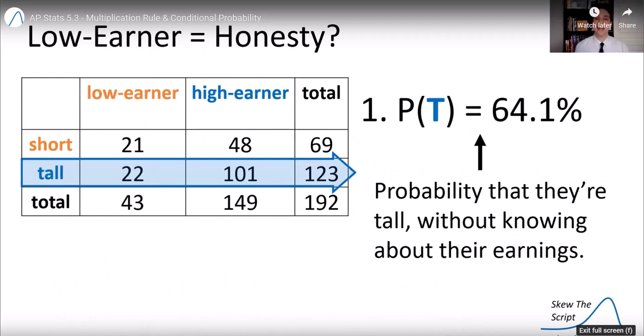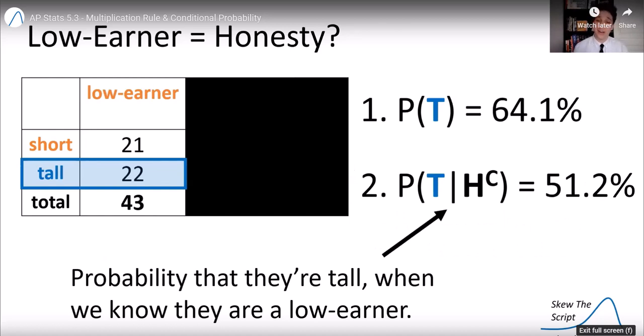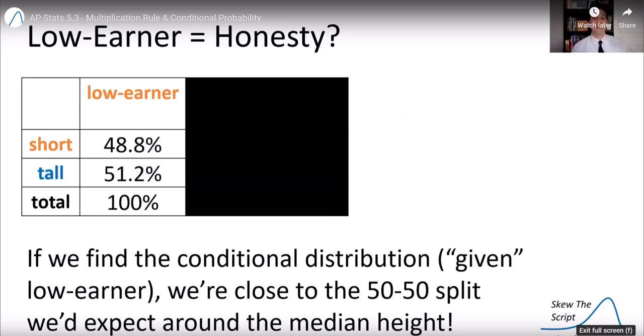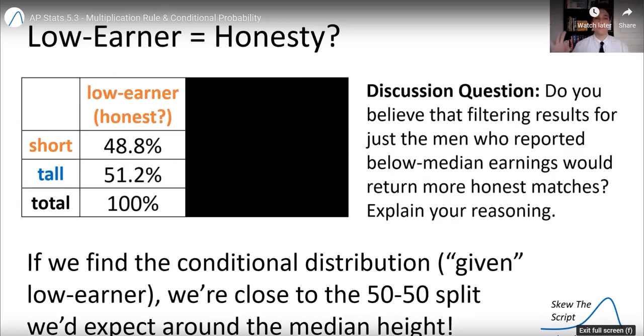If we look at everyone, the probability of finding someone who was tall was 64.1%. That's without knowing about their earnings. And if we filter for the people who just reported low earnings, so given they had low earnings, their probability of being tall was 51.2%. So here's the conditional distribution just for low earners. And we're close to that 50-50 split there. So maybe low earner in this case is acting as an indicator for someone who's honest. Do you believe that filtering results for just the men who reported below median earnings would return more honest matches on this online dating site?